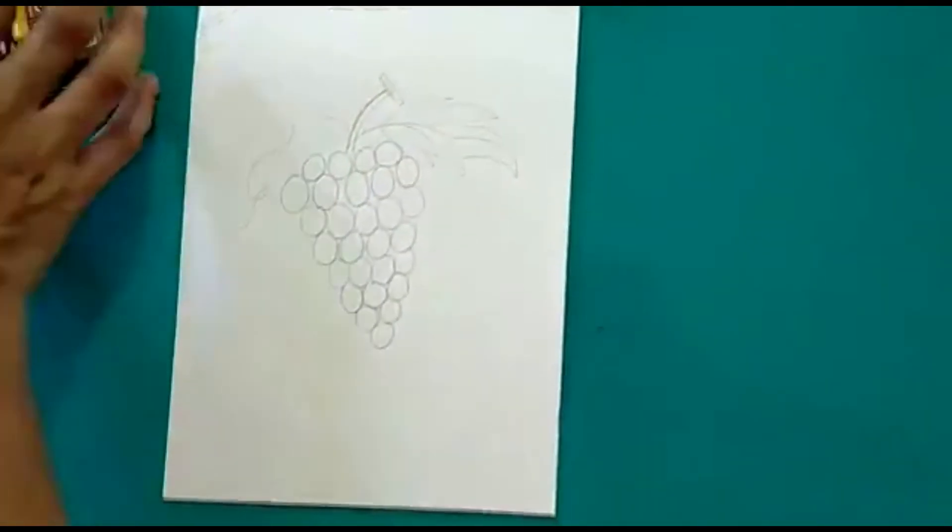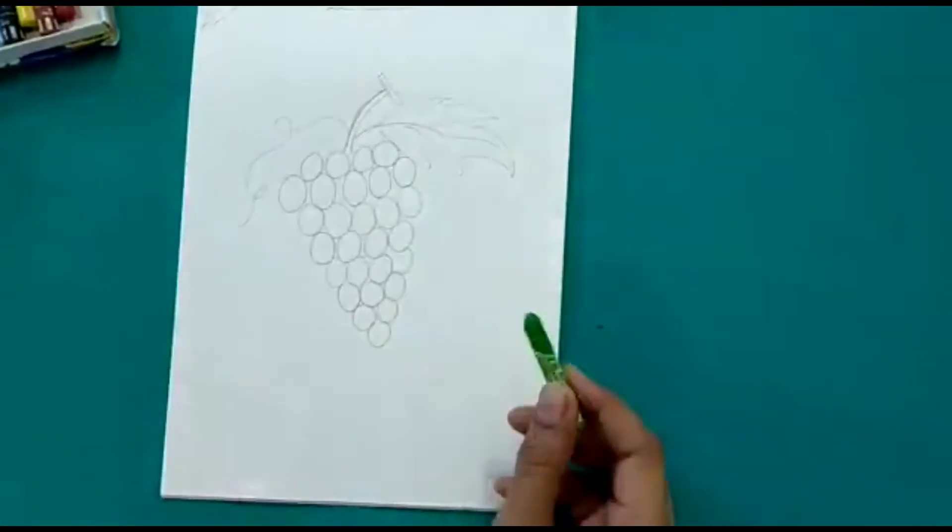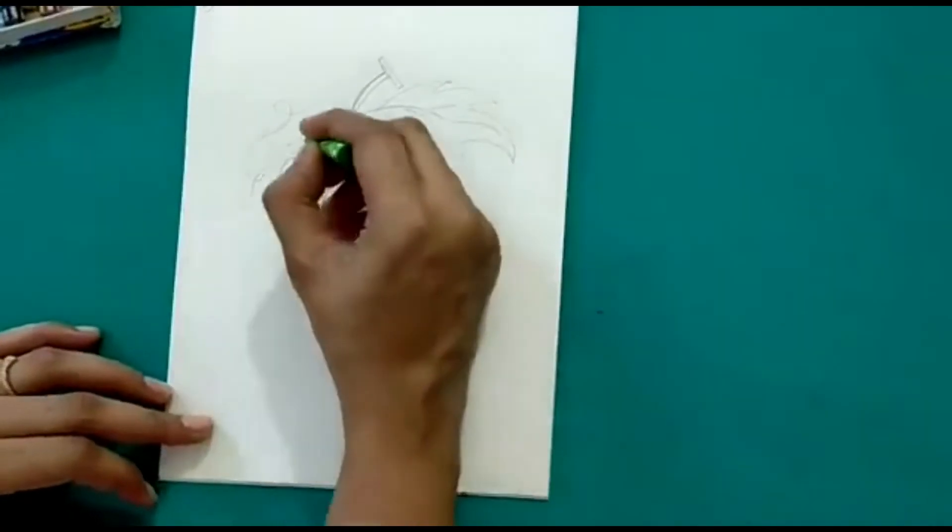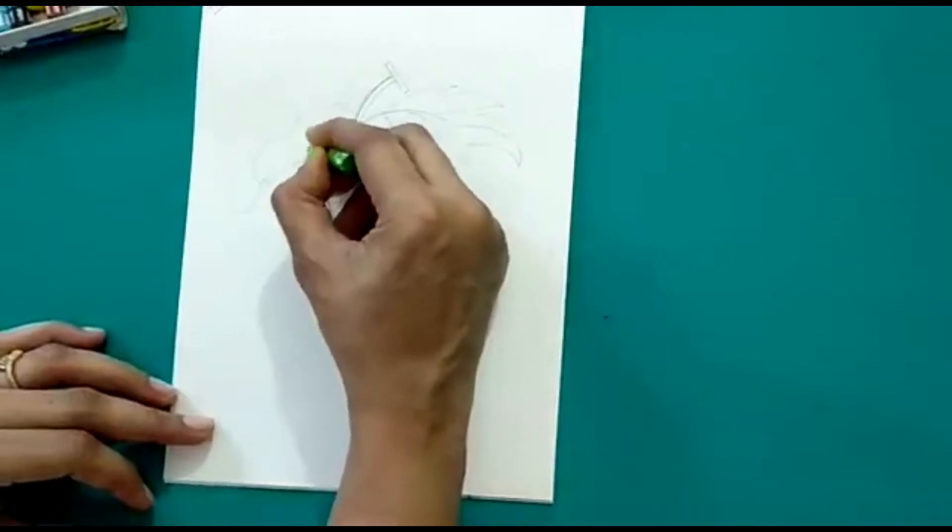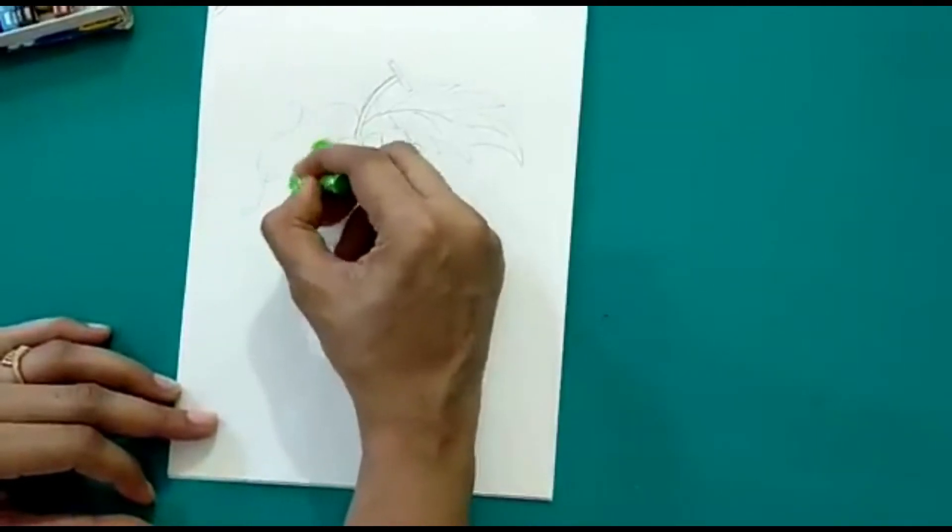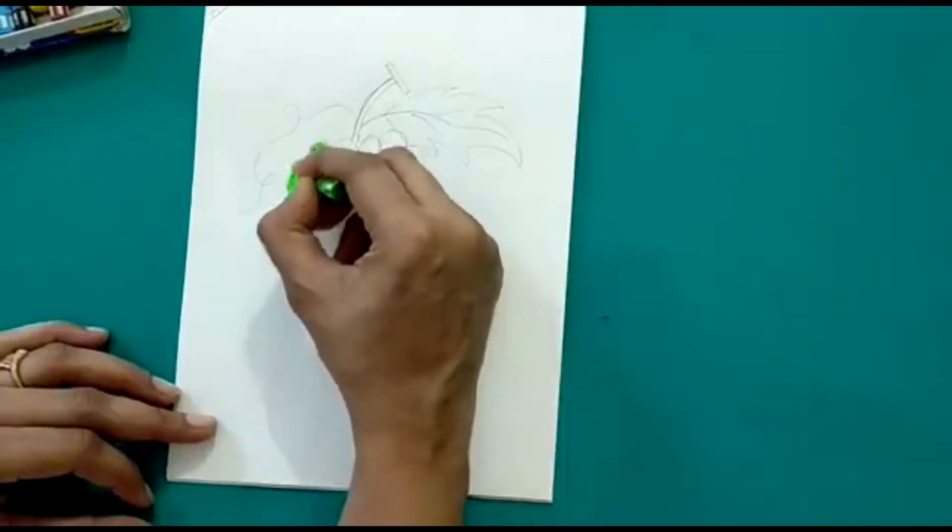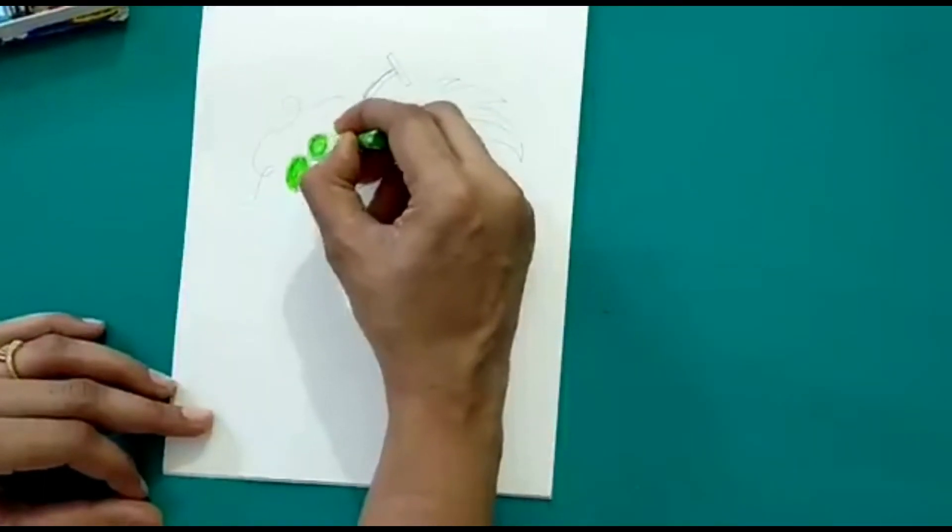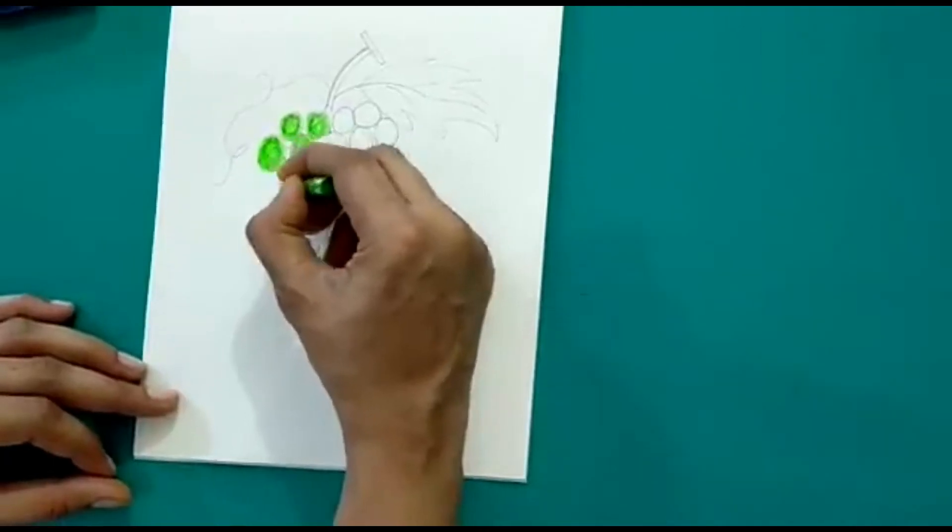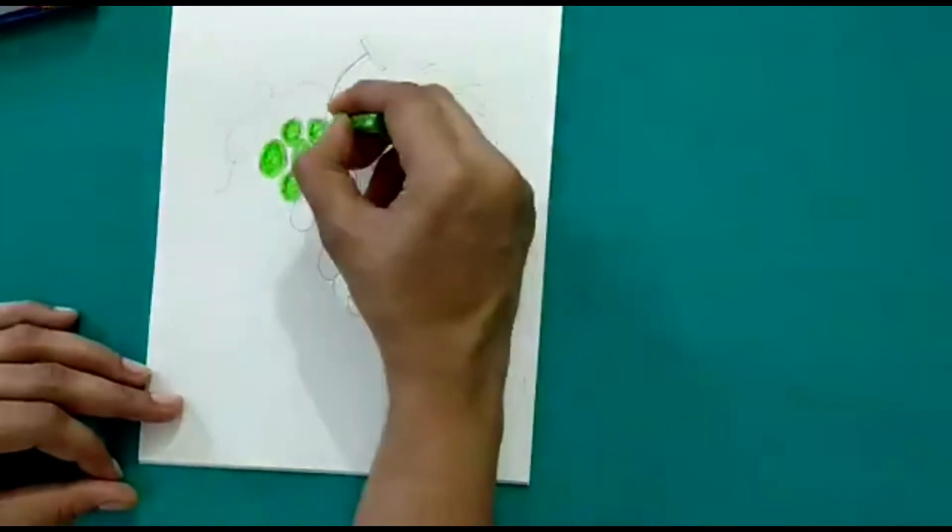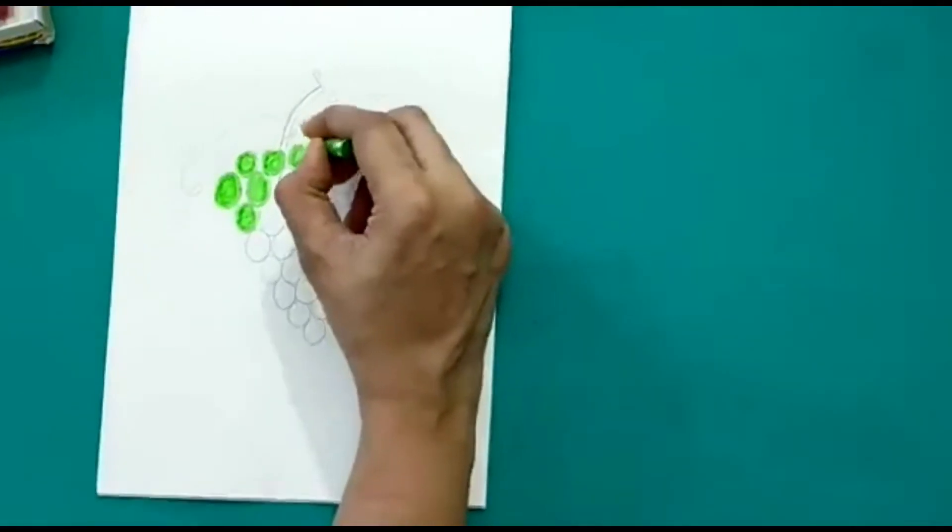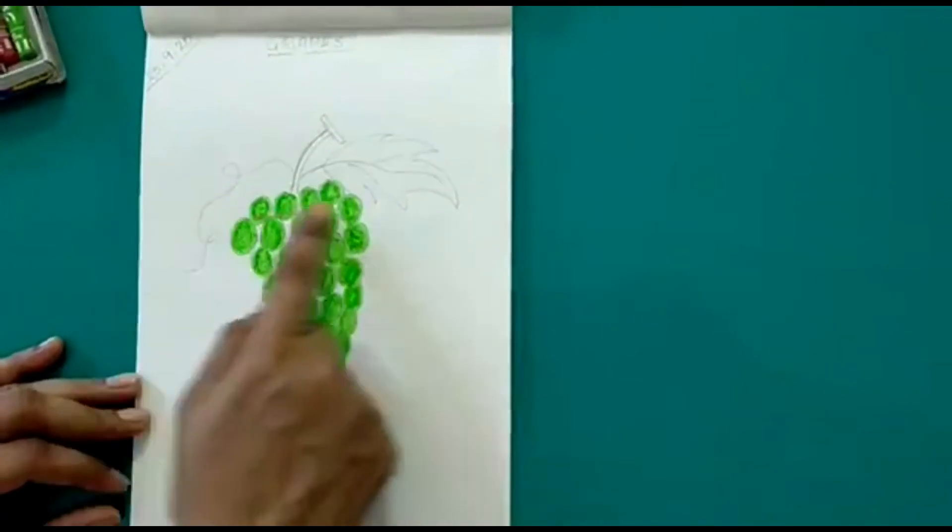Now let's color the grapes. What color is the grape? It is either green or black in color. So I am taking a green crayon and we will color the grapes now. Color it neatly. So here we have colored the grapes in green.